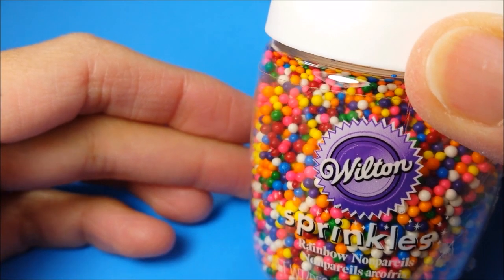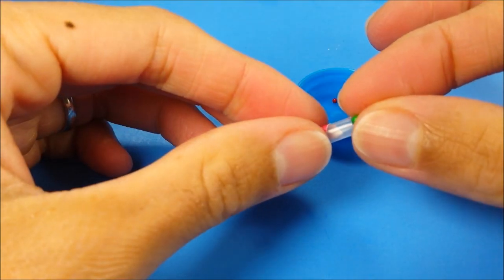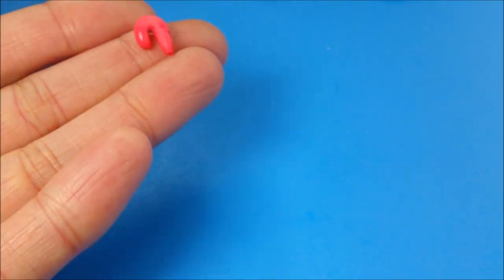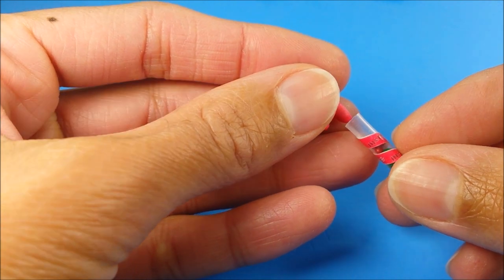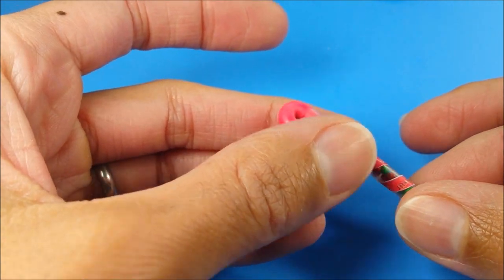When that dries, I take some sprinkles, pick out the red and green ones, and place them inside my straw. When my lid's dry, I pop it on top and you are good to go.